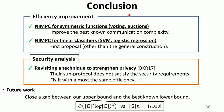Finally, we summarize this talk. In this work, we propose two kinds of efficient NIMC protocols for practical functions. The first is for symmetric functions, improving the best-known communication complexity. The second is for linear classifiers, and our work is the first proposal other than the general but inefficient construction. In addition, we revisit a previously known technique to strengthen privacy of NIMC, reveal that their sub-protocol does not satisfy the security requirements, and fix the security issue without increasing communication complexity. A possible future work is closing the gap in communication complexity between our upper bounds and the best-known lower bounds. Thank you for listening.